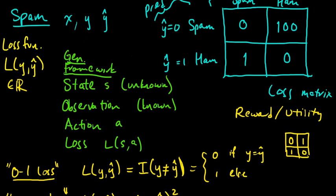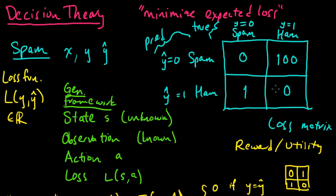And this was just a very simple example to illustrate why taking the loss function into account is an important thing to do when you're thinking about what you really are trying to accomplish with the system that you're building, the classifier that you're building.